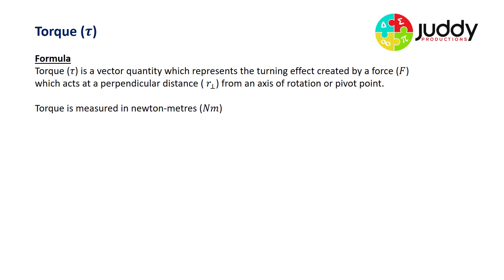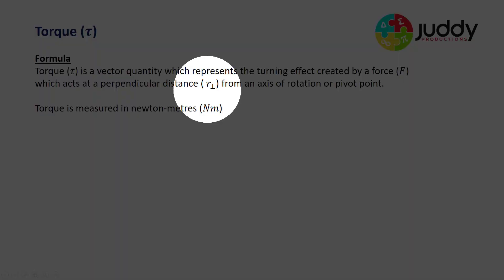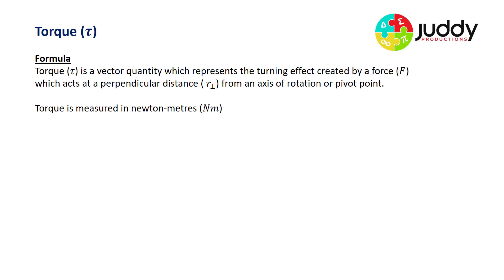A torque is a vector quantity which represents the turning effect created by a force that acts at a perpendicular distance from an axis of rotation or pivot point. The perpendicular radius uses the symbol r with a subscript perpendicular symbol. Torque is measured in newton meters.